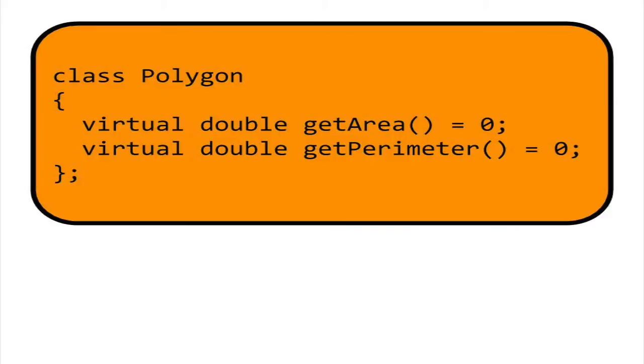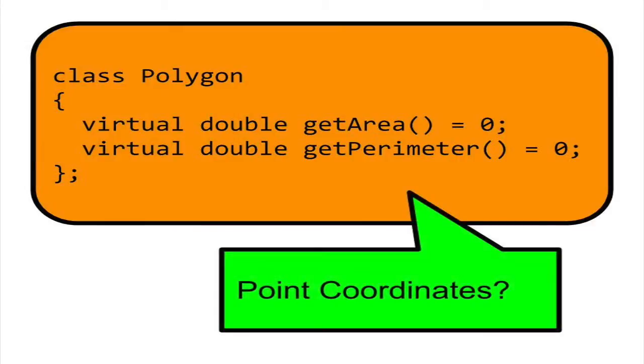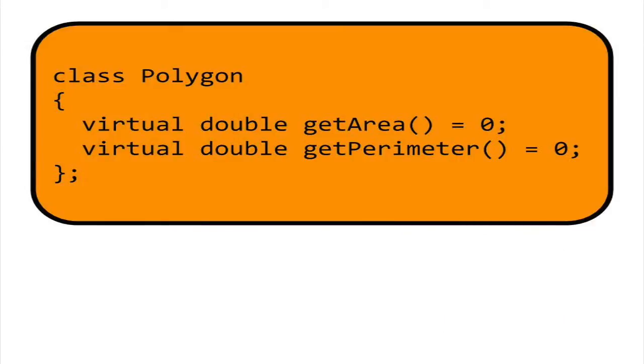It's impossible to measure the area and perimeter of a polygon unless we know the number of sides and each of its side lengths. Still, it's useful to include the area and perimeter methods as virtual functions in the base class since they describe essential components of any polygon.